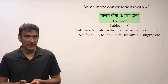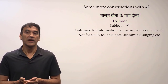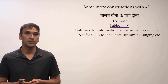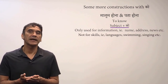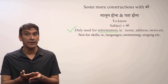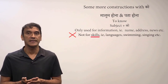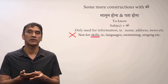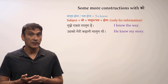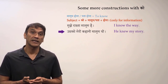The phrases 'malum hona' and 'pata hona' mean 'to know' or 'to have knowledge.' They are synonyms and can be used interchangeably. When using 'malum hona' and 'pata hona,' the subject takes the postposition 'ko.' Keep in mind that 'malum hona' and 'pata hona' are only used for information such as name, address, or news. They are not used for skills such as a language, swimming, or singing.